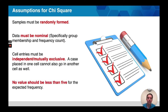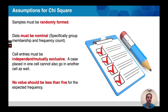Finally, no cell value should be less than five for the expected frequency. This is generally considered a prerequisite for conducting a chi-square analysis. There is something called a Yates correction, which you can look up, that will allow you to conduct a chi-square analysis if you do have an expected frequency less than five.